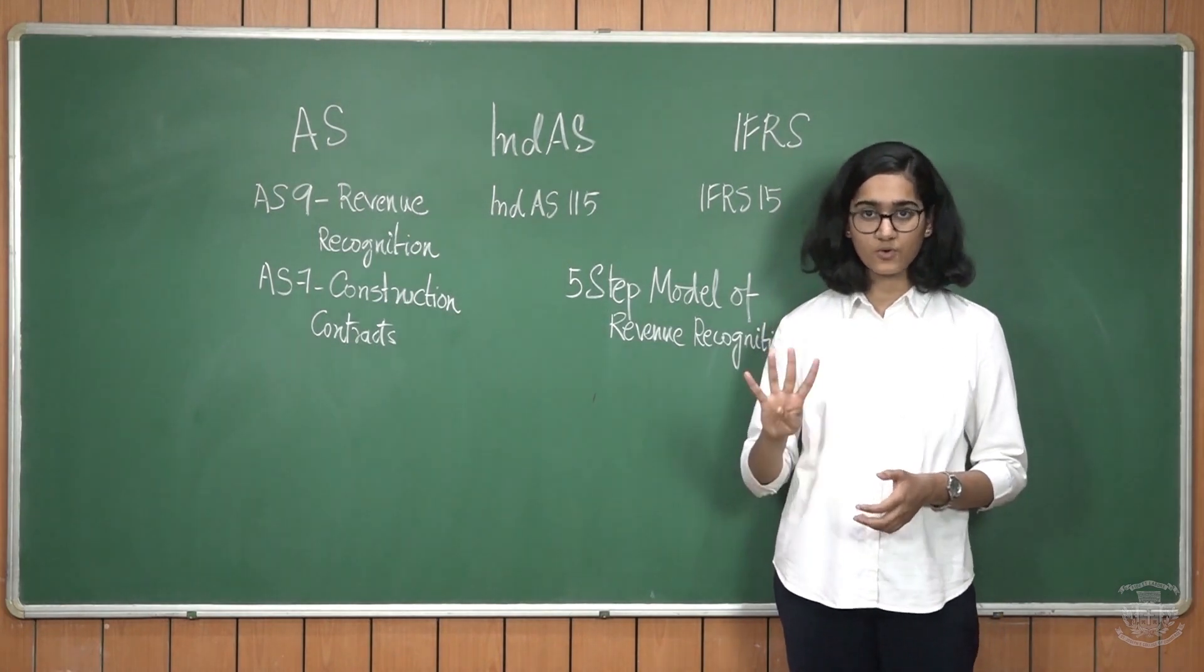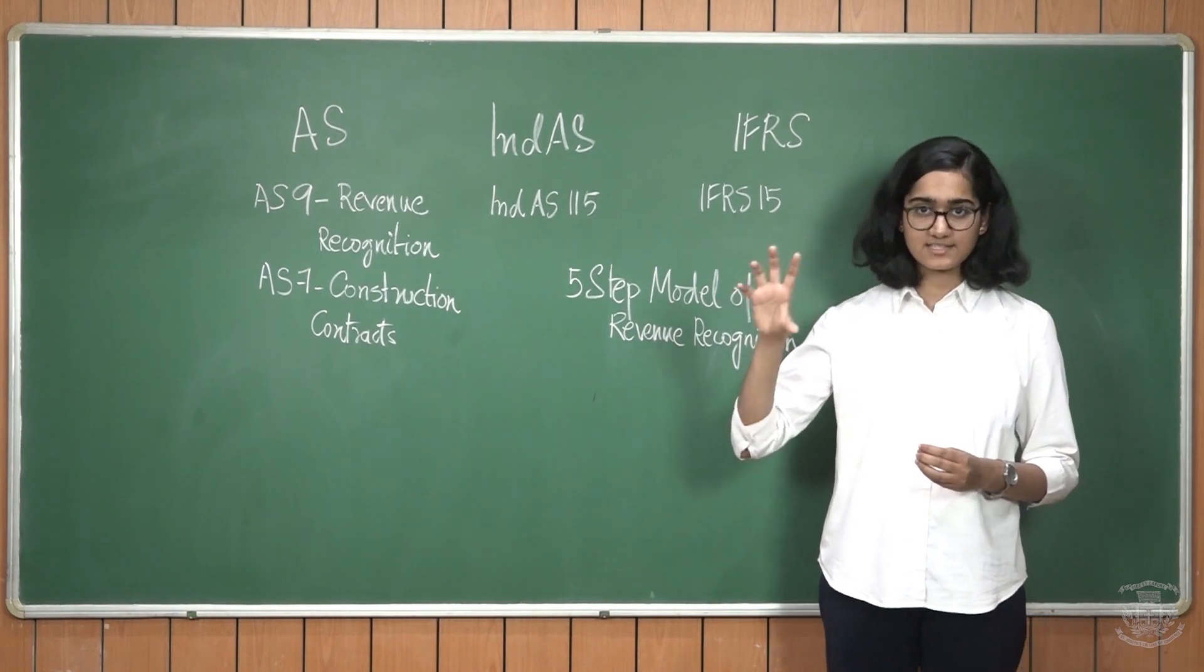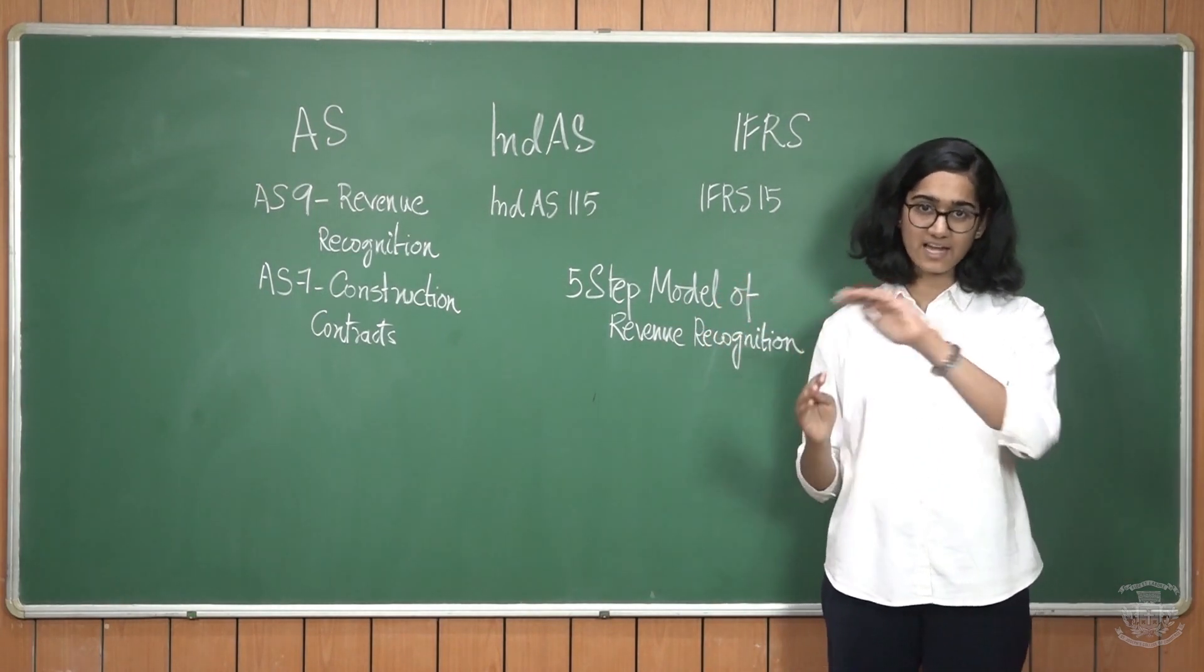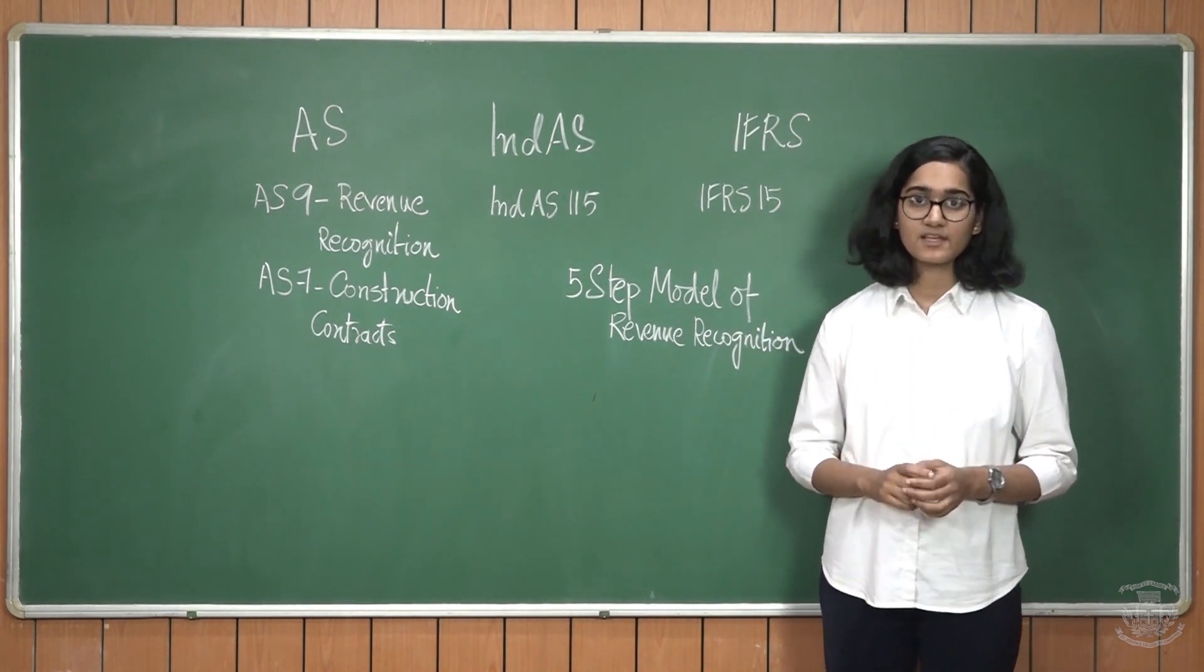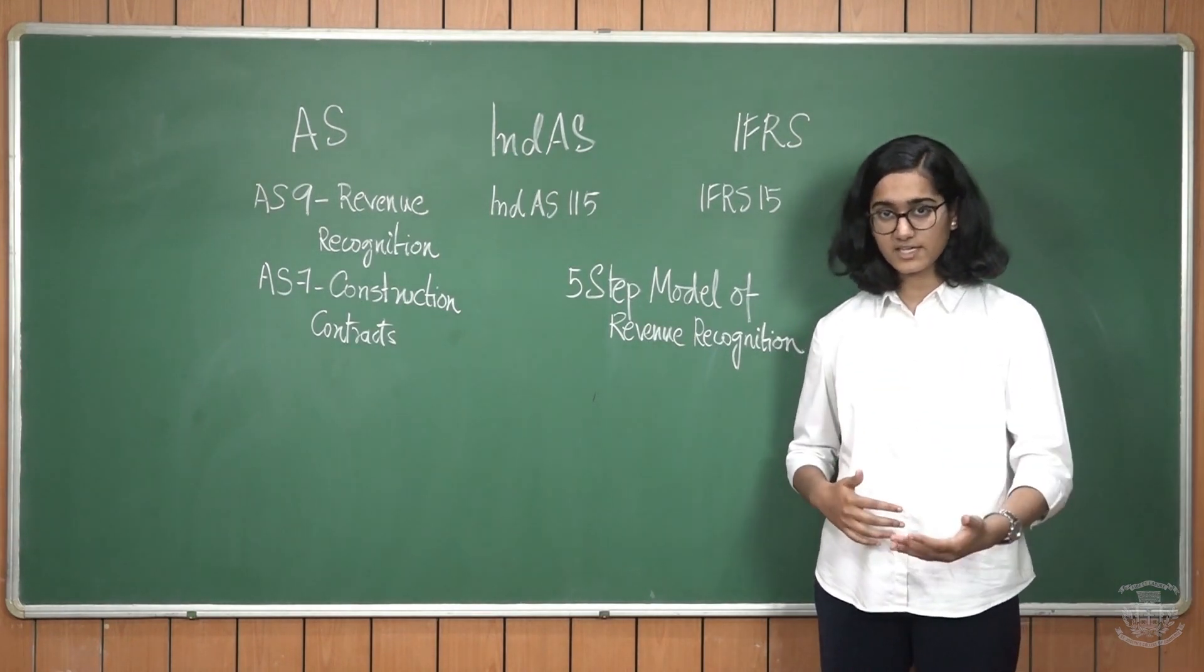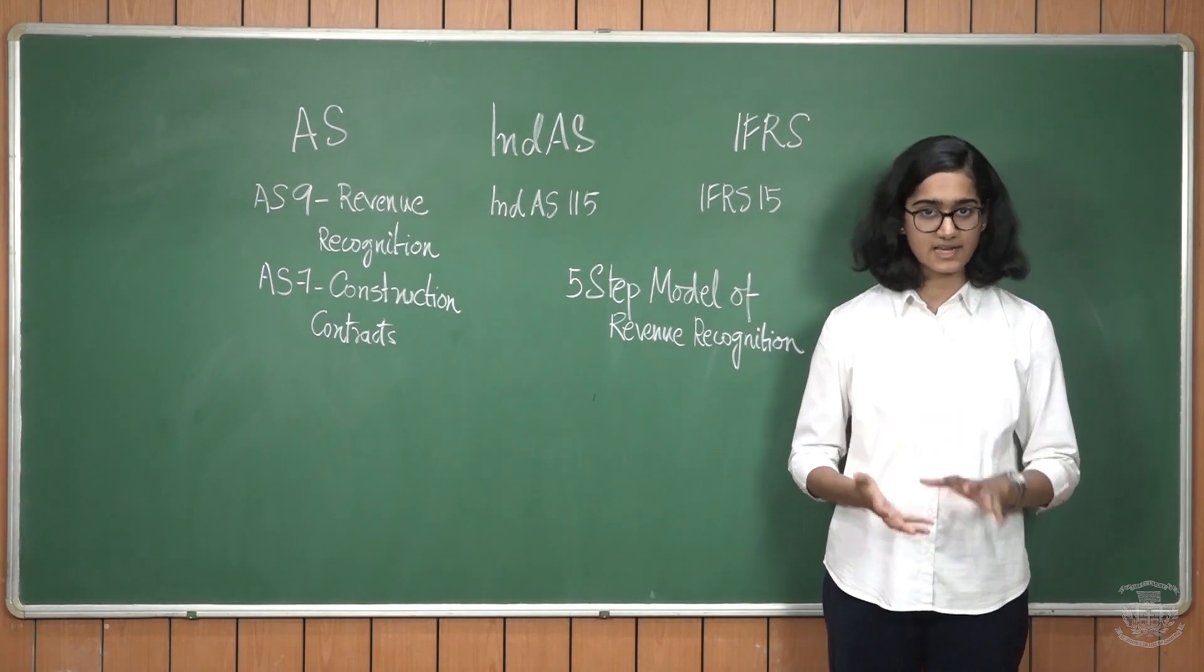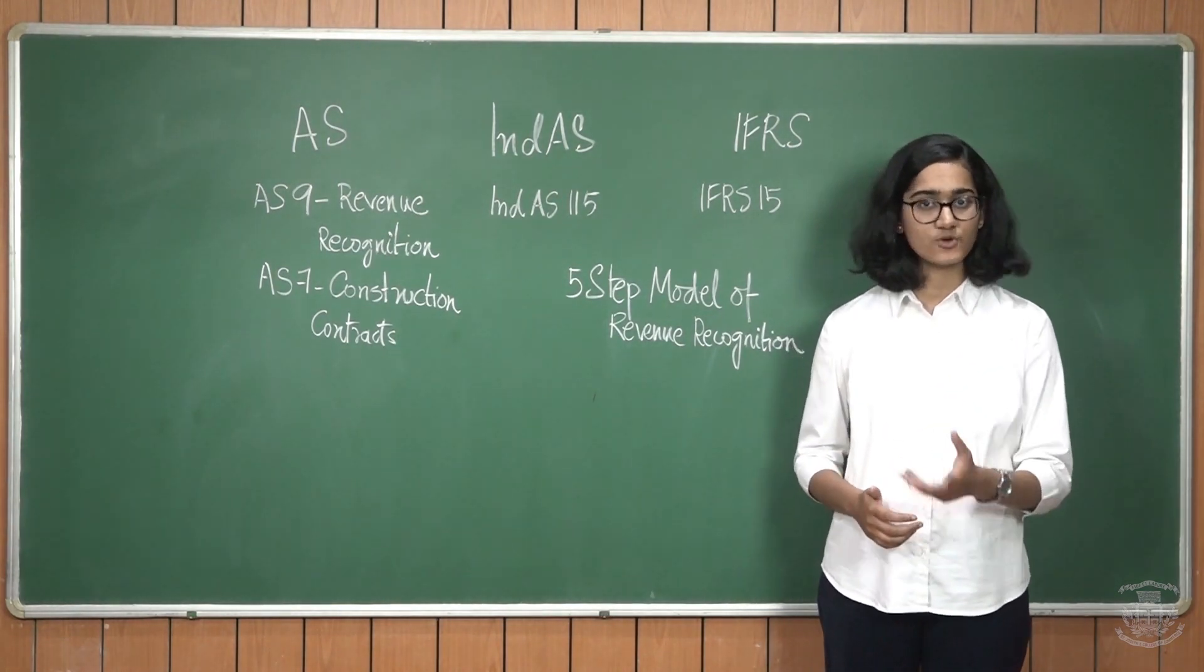Step number four mainly talks about the transaction price that we have calculated in step number two has to be allocated to each and every performance obligation identified. Step number five says that finally revenue will be recognized only when the performance obligations are satisfied. This might sound a bit too big, so let me explain it through a good example.